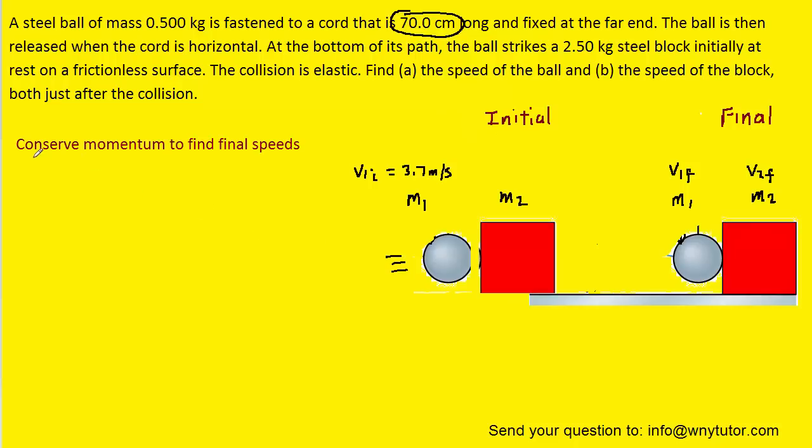So in the next phase of the problem, we're going to use the conservation of momentum to calculate the final speeds of both objects. We've labeled those objects as M1 and M2. M1 is for the steel ball, M2 is for the block. Notice that the 3.7 meters per second that we calculated earlier in the problem is now going to serve as the initial velocity of the steel ball. The initial velocity of the block is actually zero.